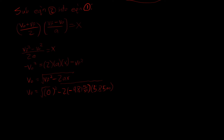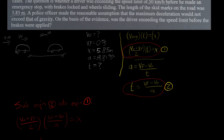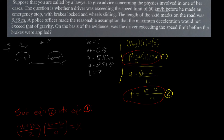Taking the square root of all that, our initial velocity comes out to 10.71 meters per second. This is a nice result — we found the initial velocity of the vehicle — but this doesn't yet answer the question, because the question asks whether the driver was exceeding the speed limit of 50 kilometers per hour before the brakes were applied.